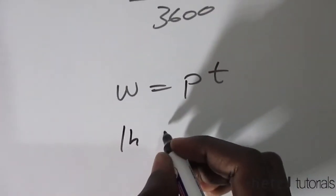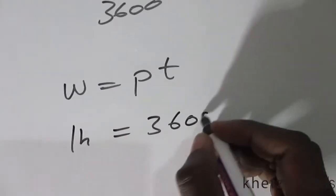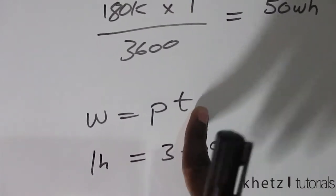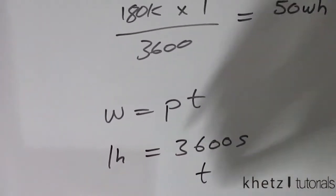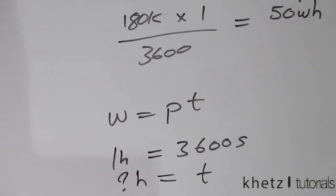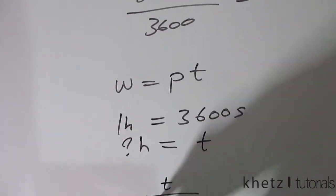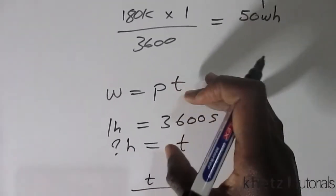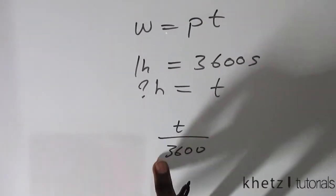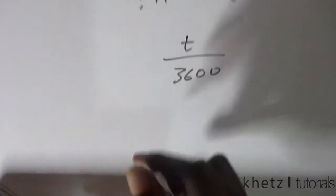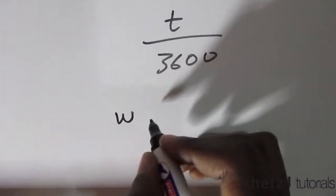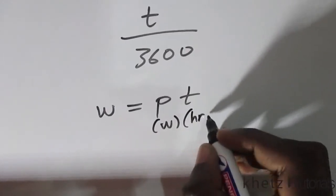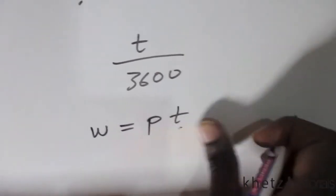So one hour equals 3600 seconds. Whatever time that we have here in seconds, we want to find its equivalent in hours. So that'll be the time divided by that. So whatever time is here in seconds, to convert it into hours, we have to divide it by 3600. Taking this substitution into this formula will give us watt hours, which is what we want.